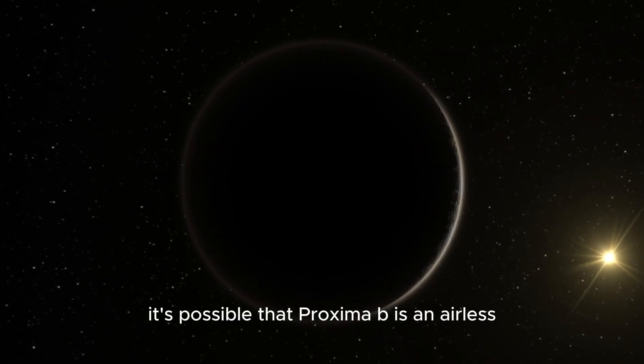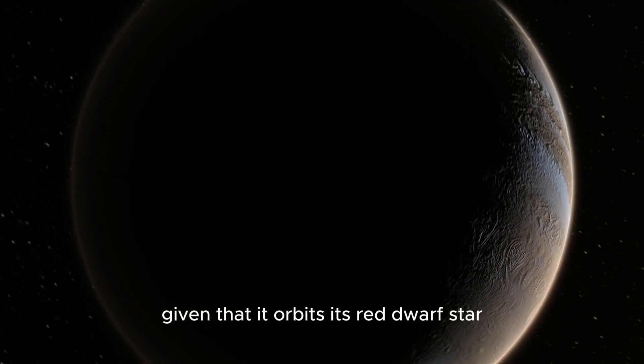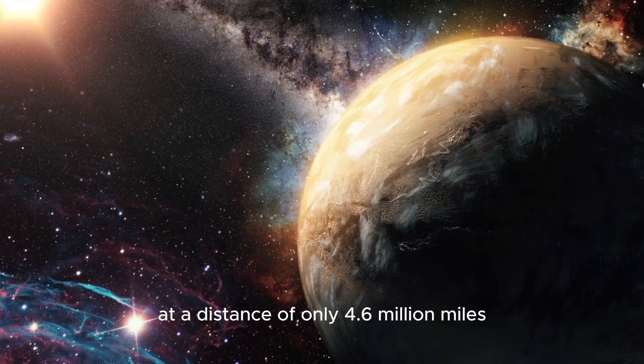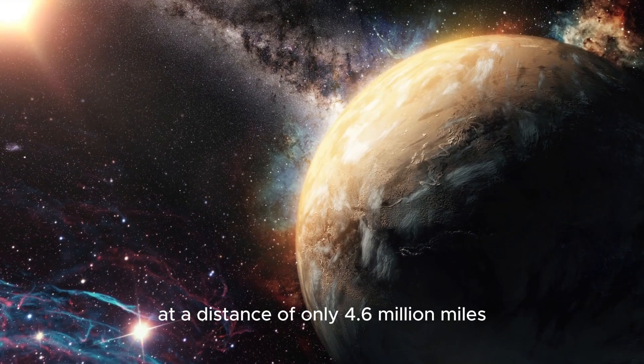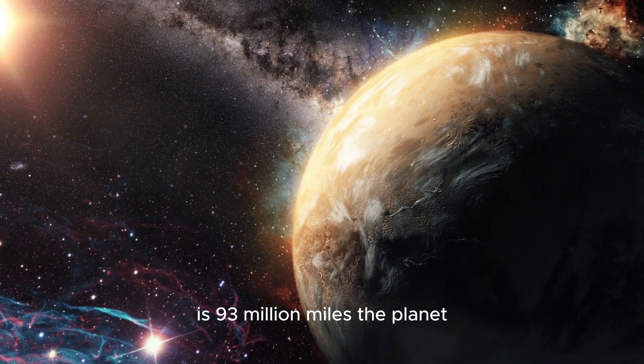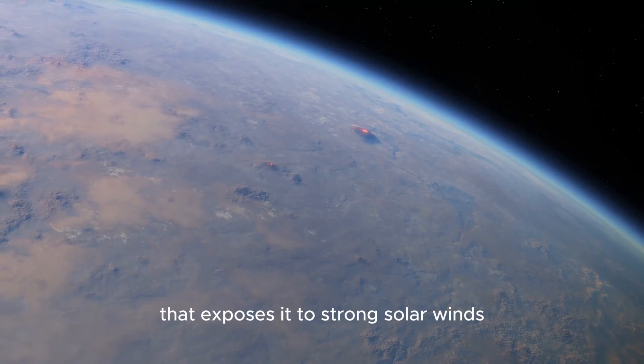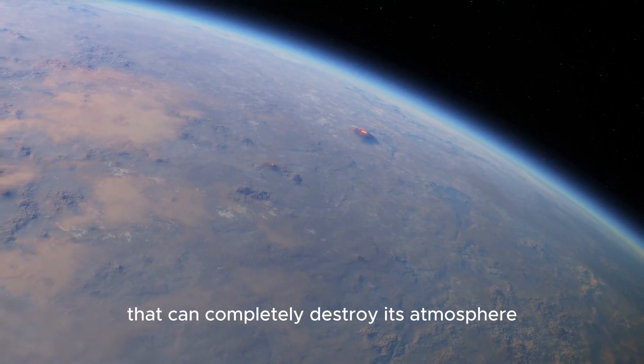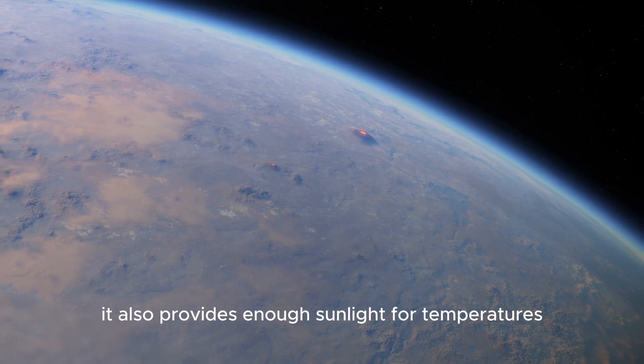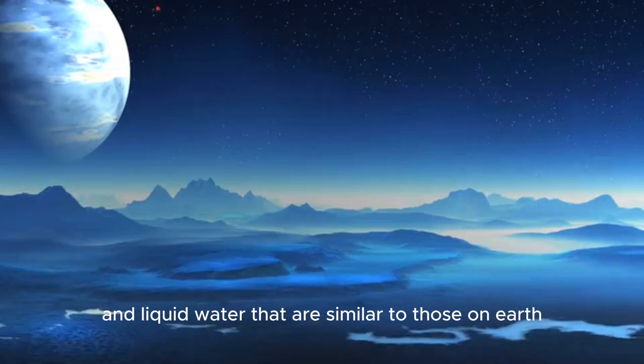Proxima b orbits Proxima Centauri. It's possible that Proxima b is an airless, lifeless planet, given that it orbits its red dwarf star at a distance of only 4.6 million miles. The distance between the Sun and Earth is 93 million miles. The planet Proxima b is in a close orbit that exposes it to strong solar winds that can completely destroy its atmosphere. It also provides enough sunlight for temperatures and liquid water that are similar to those on Earth.